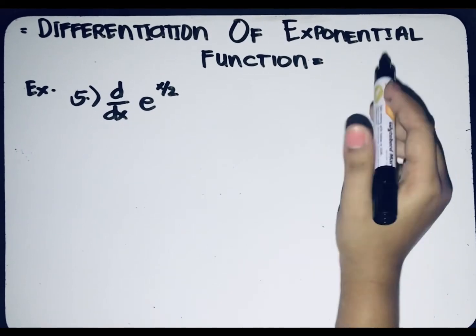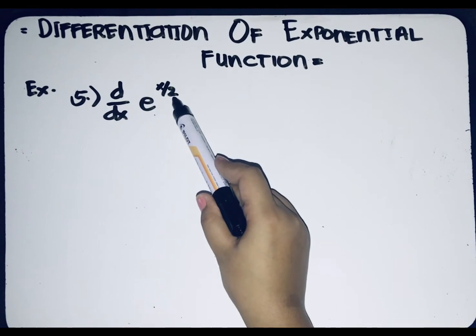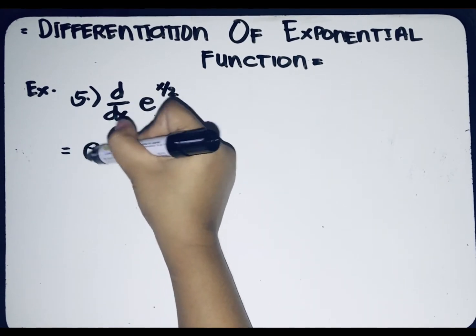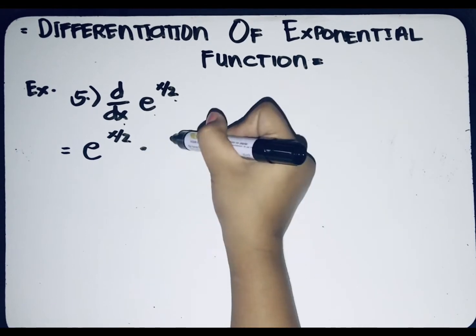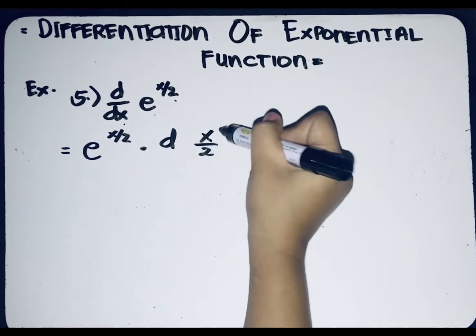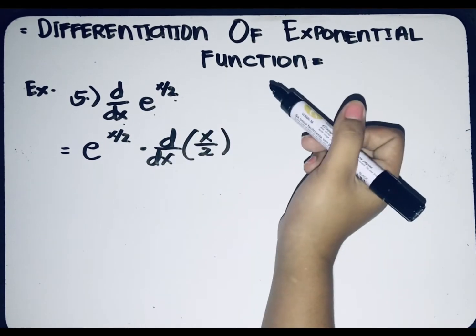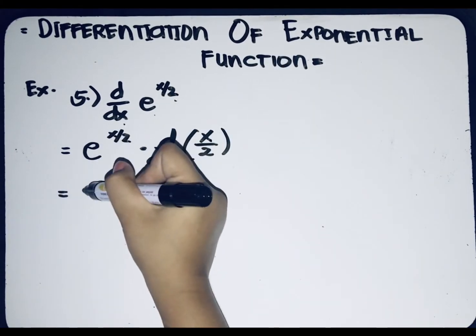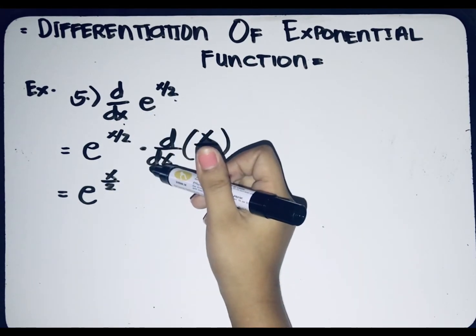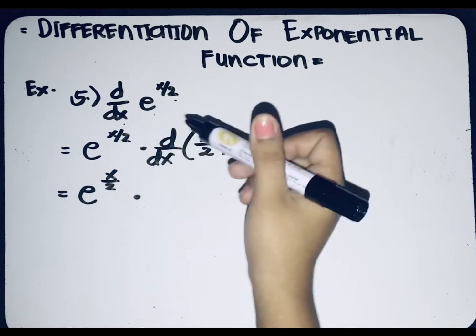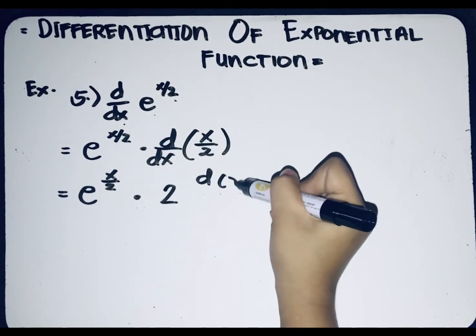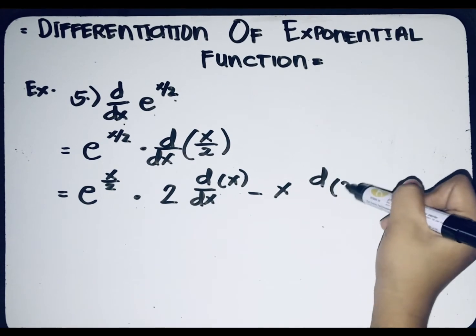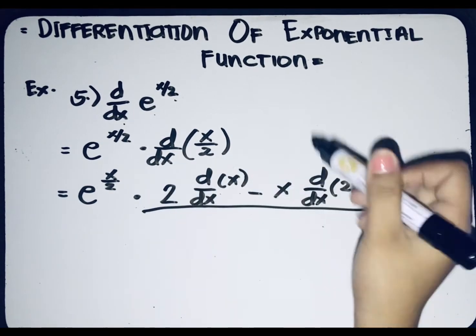For the last example, find the derivative of e raised to (x/2) with respect to x. Applying the second formula, we get e raised to (x/2) multiplied by the derivative of (x/2) with respect to x. For the derivative of x/2, we apply the quotient rule: [2 times the derivative of x with respect to x, minus x times the derivative of 2 with respect to x] all over 2 squared.